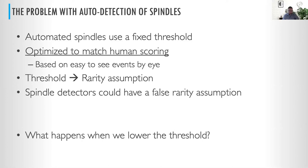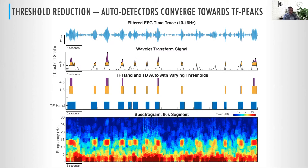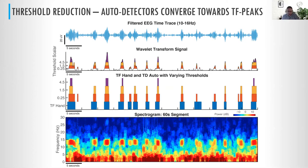So we asked: what if we just lower the threshold? Here is a band-pass filter within the sigma range — what one of these detectors would see. The Wamsley detector has a threshold at 4.5 times the mean of this signal, and every time it's above that threshold for a certain duration, it marks it as a spindle. As we decrease the threshold, we have a lot more events, and everything added actually does correspond with a time-frequency peak. As we lower it even further, we essentially converge to time-frequency peaks.